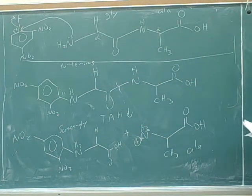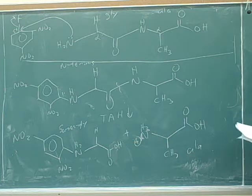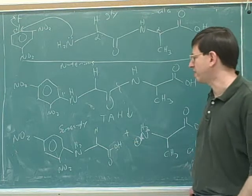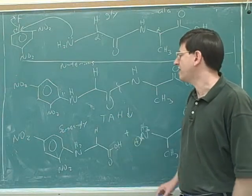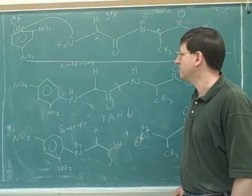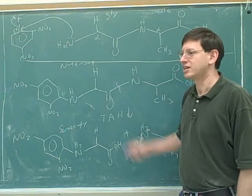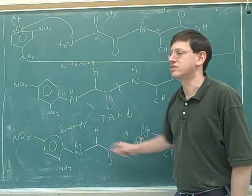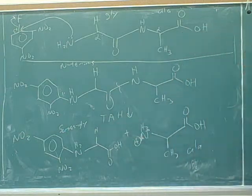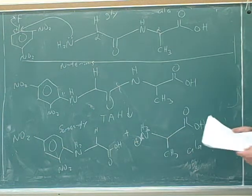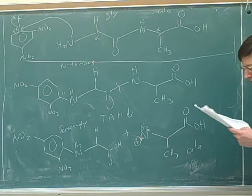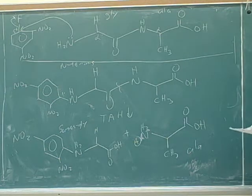So you need to be able to recognize what Sanger's reagent looks like or what the dansyl chloride looks like. He'd have to give you a product. He'd say you're starting with an octapeptide, and then he will give you the products of the total acid hydrolysis. You're going to take the octapeptide and treat it with Sanger's reagent, then do total acid hydrolysis and here's the products. We can do this labeling with the Sanger's or the dansyl chloride. But, there's a complication.